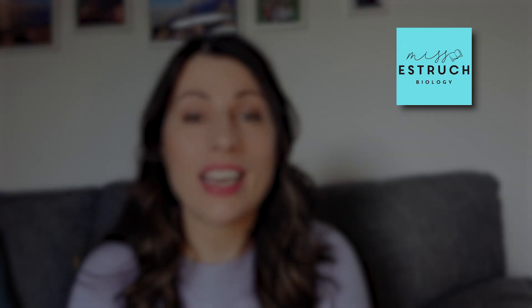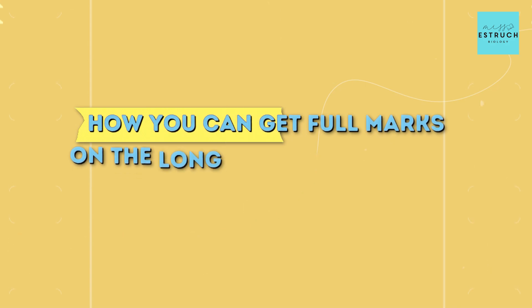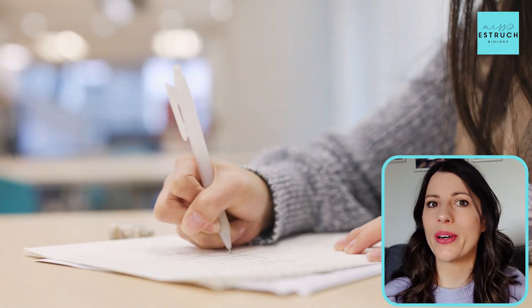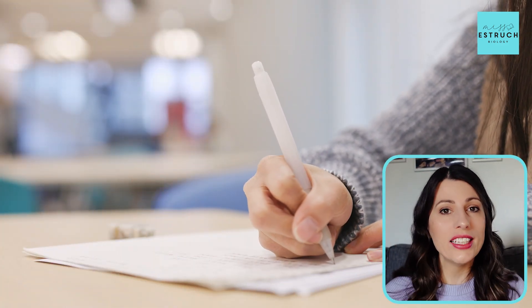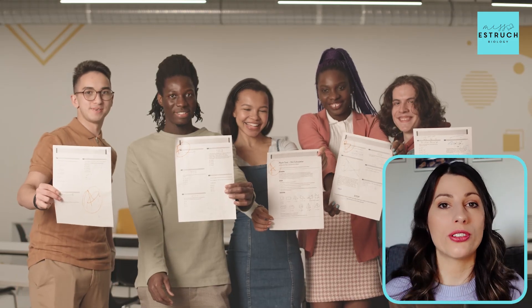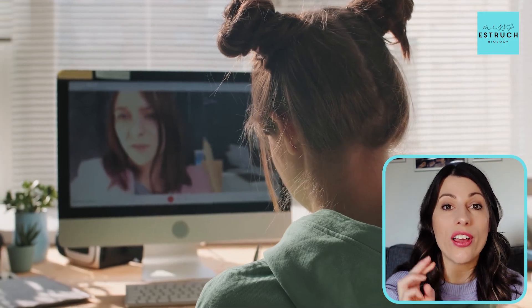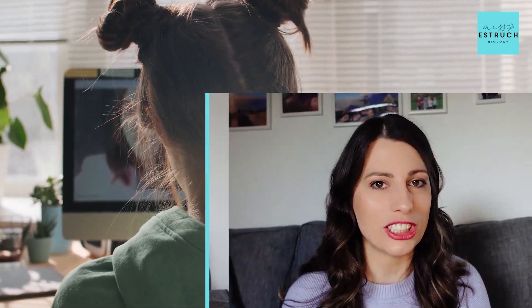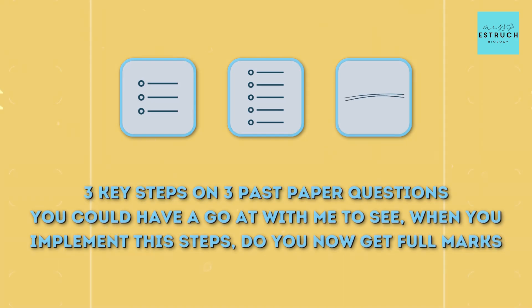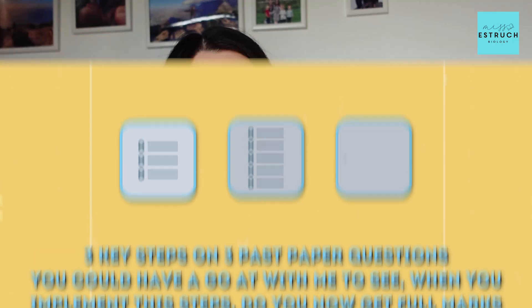Hi everyone and welcome to Miss Airstrip Biology. In this video I'm going to be talking you through how you can get full marks on the long answer questions in A-level biology. These long answer questions, for example the five mark questions where it's just describe everything you know about a particular topic, can really divide the crowd. People either love them or hate them. I personally love them — I think they're one of the easiest ways to get full marks and bump up your grade. I'm going to talk you through three steps to help you get full marks on these questions. Stick around at the end because I'll be modelling these three steps on three past paper questions.